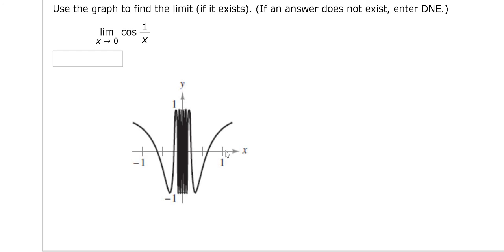Likewise, if you approach from the right, the graph is still just oscillating between negative one and one. In fact, the closer you get, it seems like the more that the oscillation occurs.